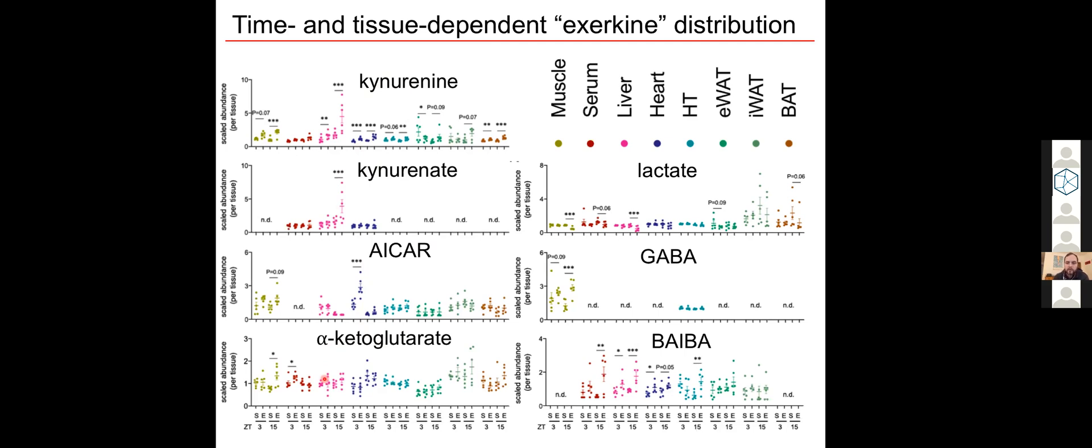Looking at the data with this global perspective, maybe it can give us some clues about how to elicit a desired metabolic response, at least in the mice here. So if we want to target our exercise therapy to a particular time point, we might expect a more robust production of a particular exerkine in a particular tissue. But it doesn't seem to be the case that all exerkines are created equally.